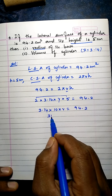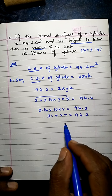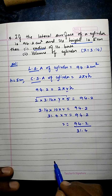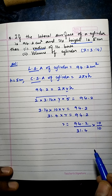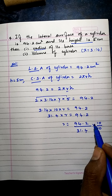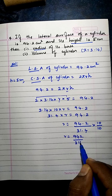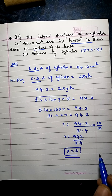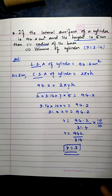To find r, divide: r = 94.2 ÷ 31.4. Converting to whole numbers by multiplying and dividing by 10 gives 942 ÷ 314 = 3. So r = 3 cm.